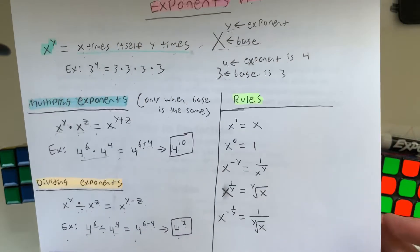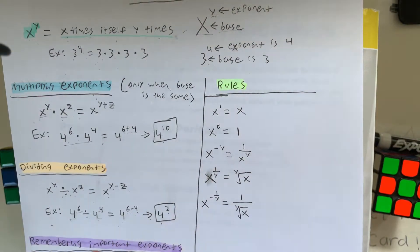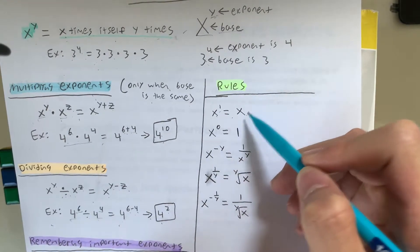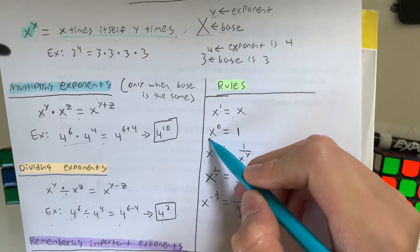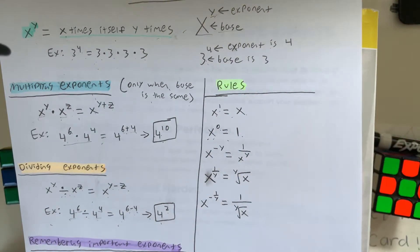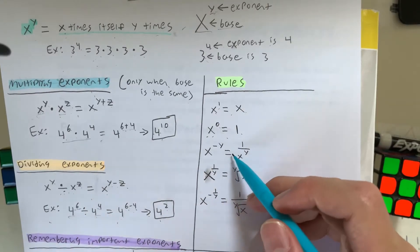So there are some rules that are concerned with exponents. One of them is x to the 1st is always equal to x. And you guys might not know this, but x to the 0 is equal to 1, and that's always true.